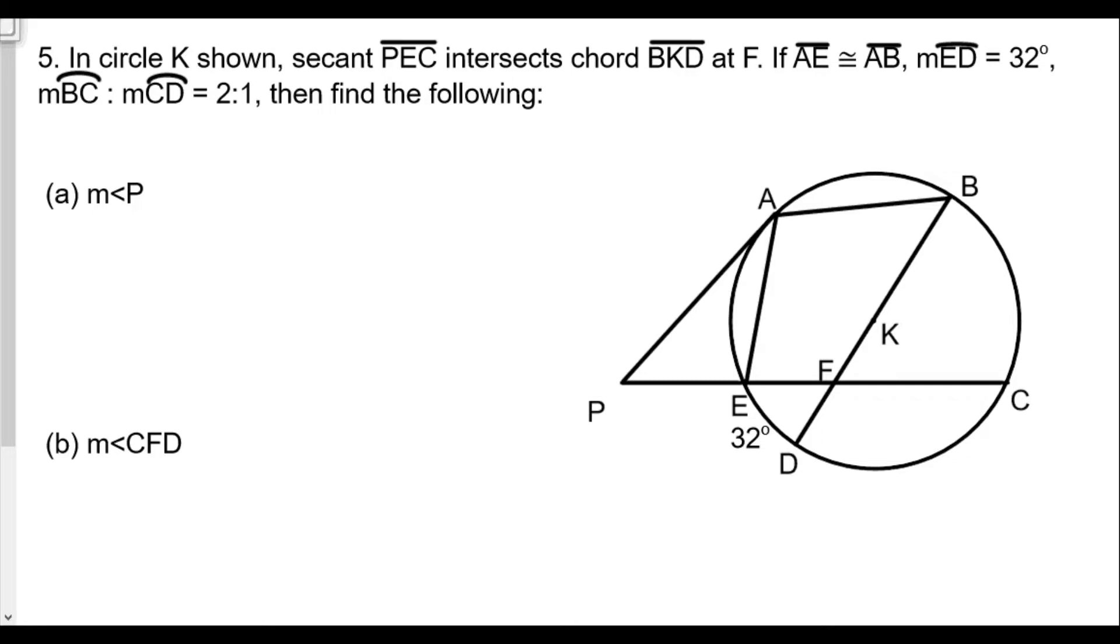Welcome back everybody, we are now doing part three of lesson 22 homework review of tangents and secants proofs and problems. This is the last question, still a very involved question though. In circle K shown, secant PEC intersects chord BKD at point F.